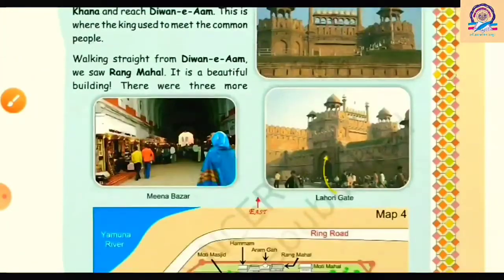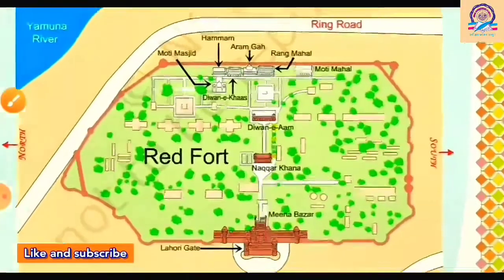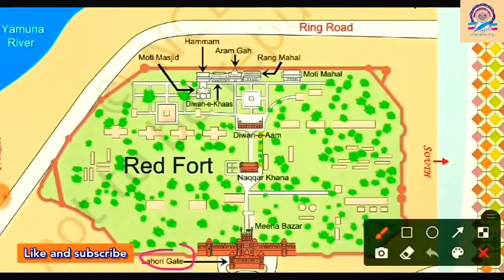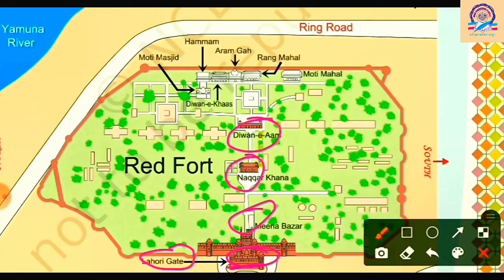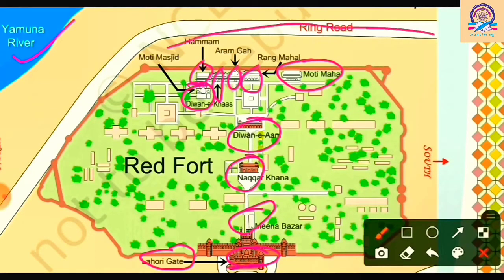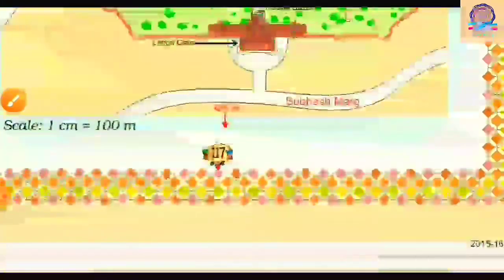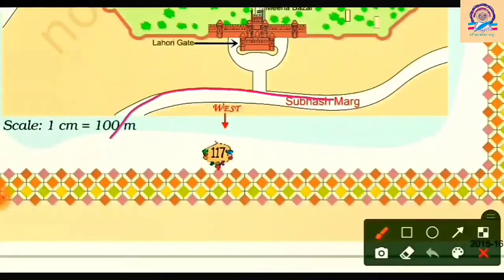Now let's find all these places on map four, the map of Red Fort. At the bottom is Lahori Gate, then Meena Bazaar, then Nakkar Khana, Diwane Aam, Moti Mahal, Rang Mahal, Aram Ghaa, Diwane Khaas, Hammam, and lastly Moti Masjid. On the top left is the Yamuna River, on the upper part is Ring Road, and at the bottom is Subhas Marg. The scale given is 1 cm equals 100 metres.